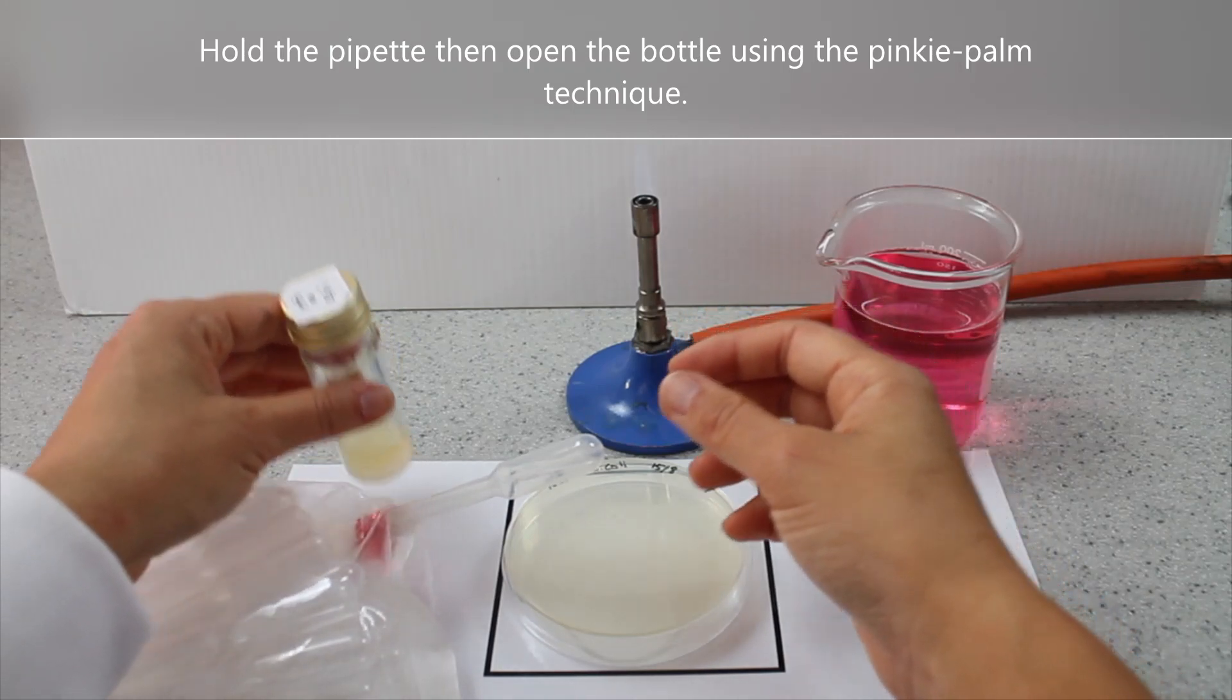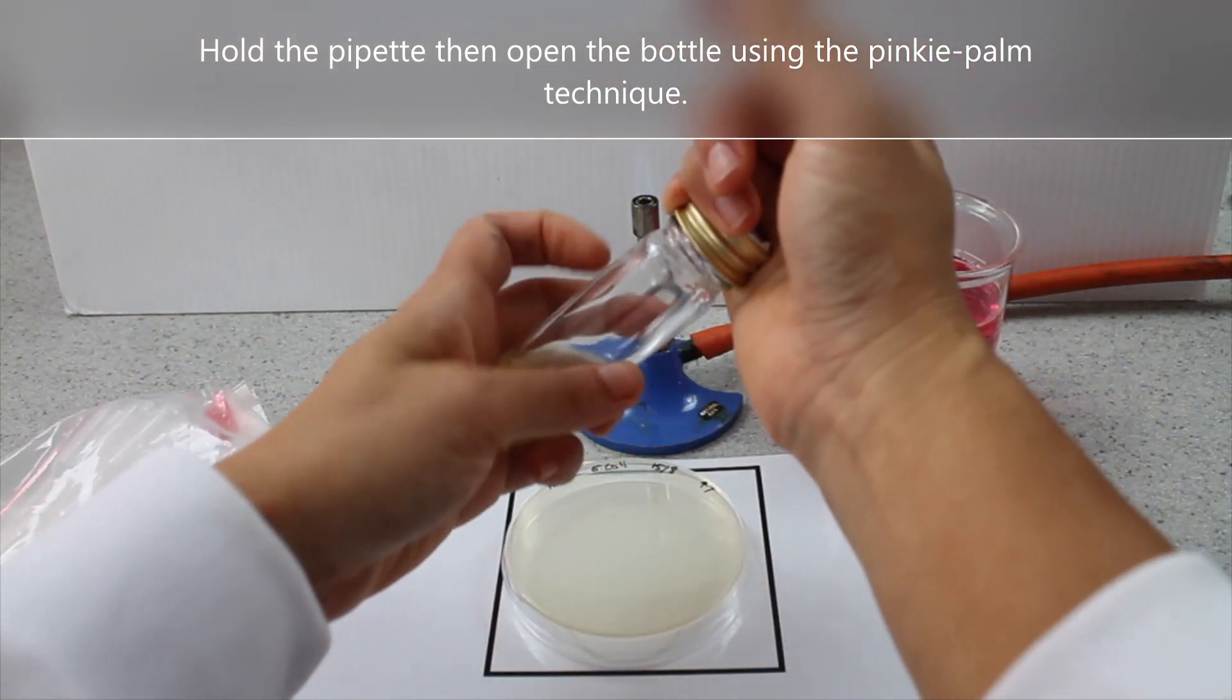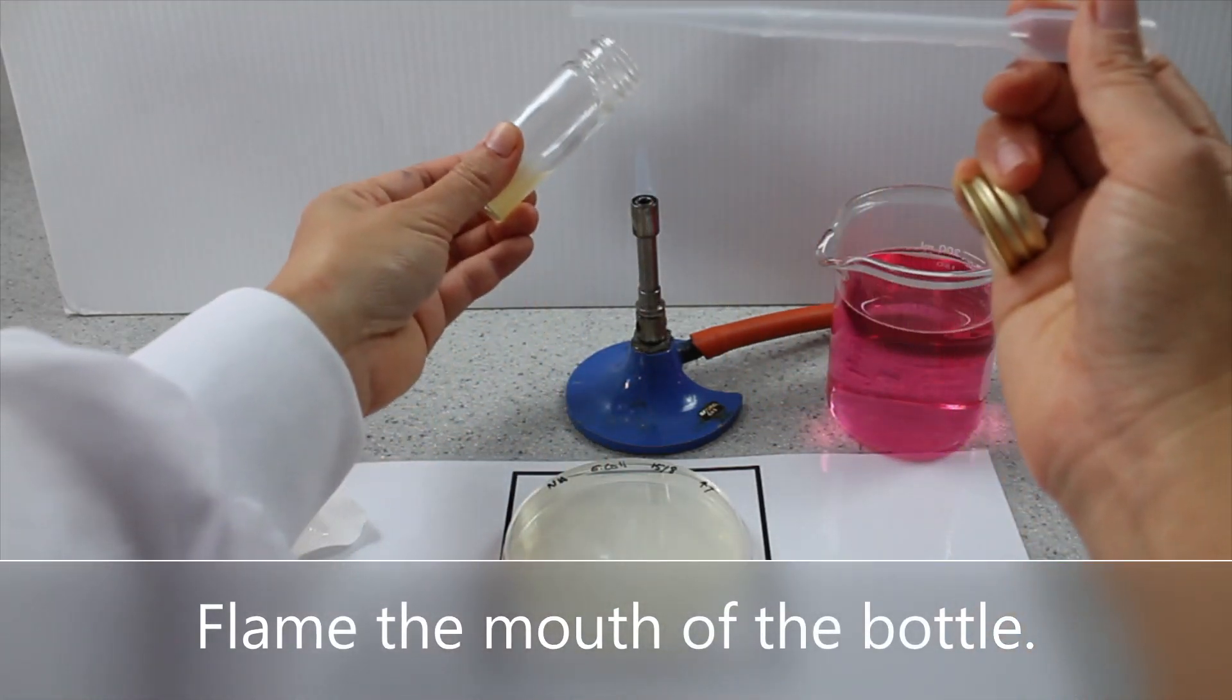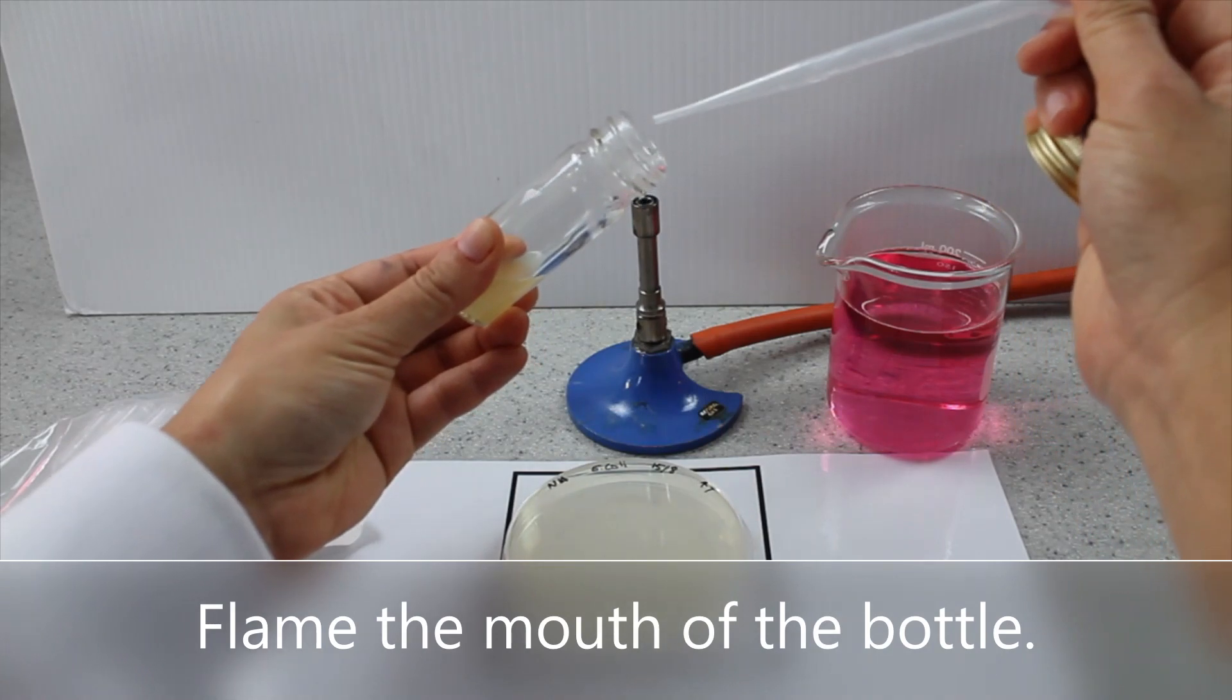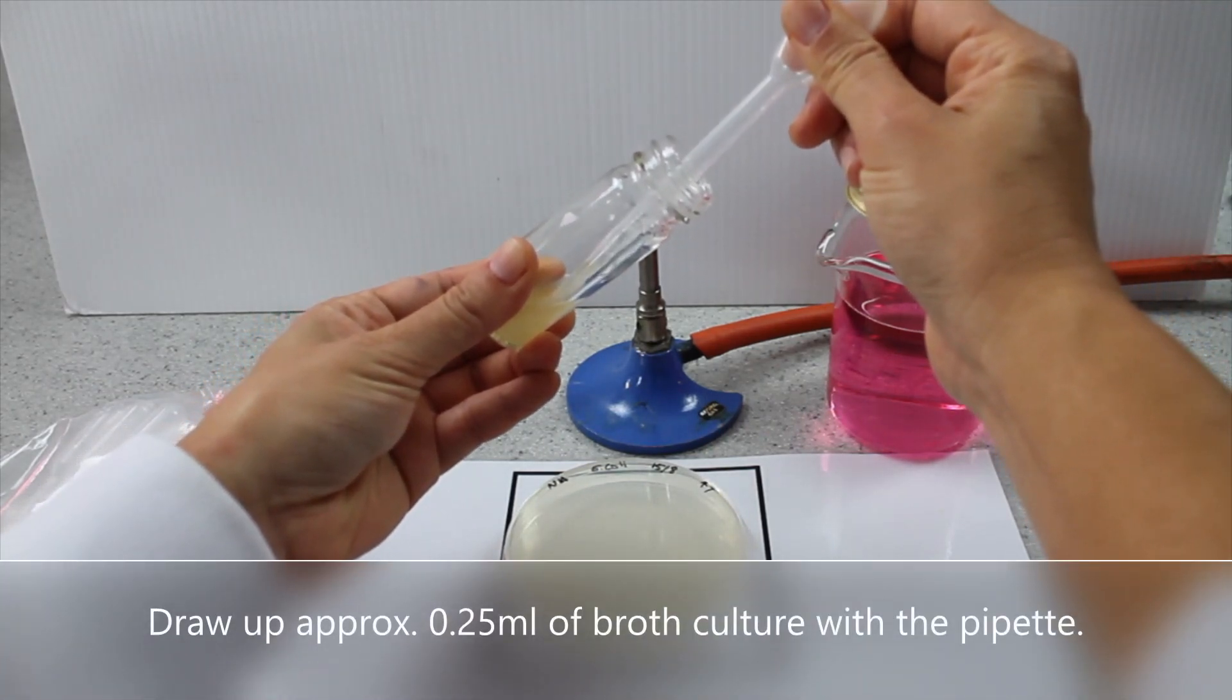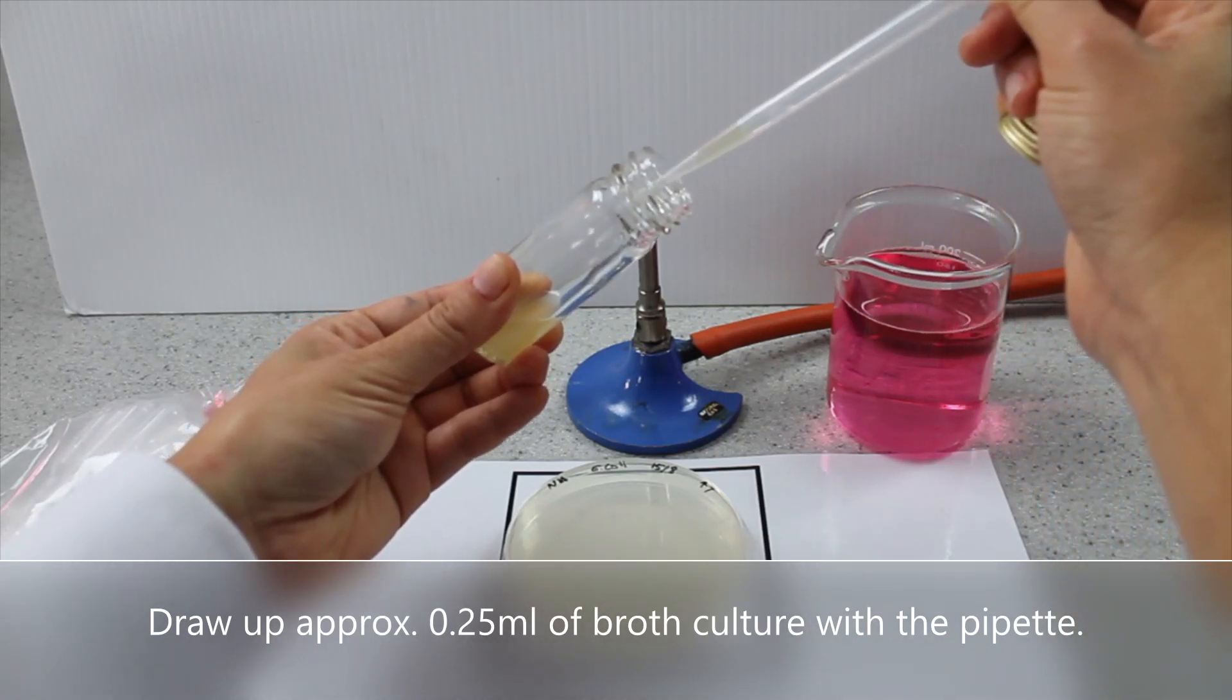Hold the pipette then open the bottle using the pinky palm technique. Flame the mouth of the bottle. Draw up approximately 0.25 ml of broth culture with the pipette.